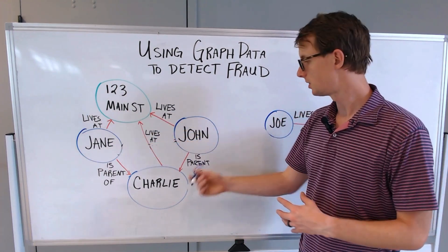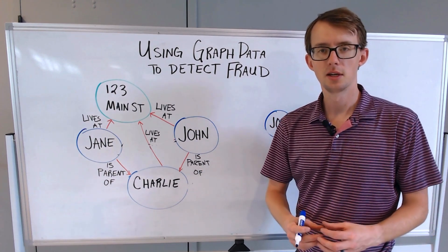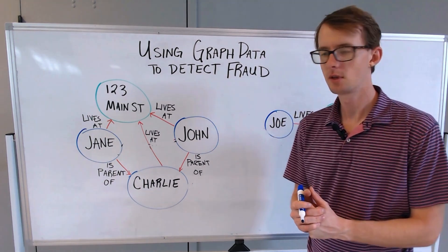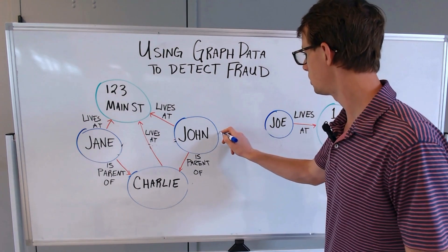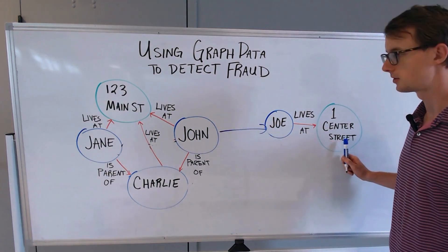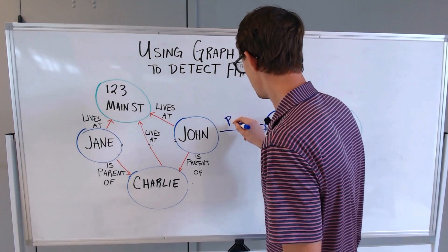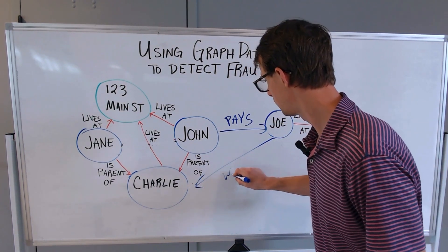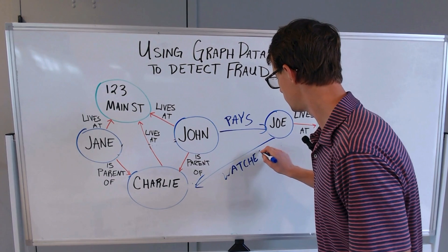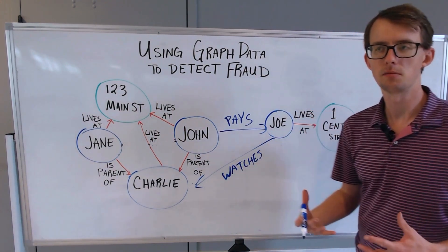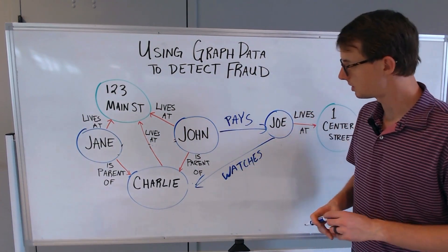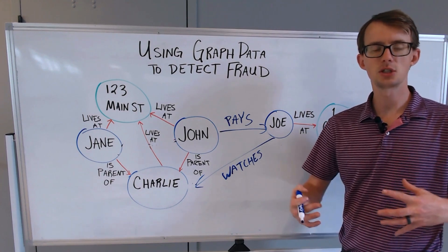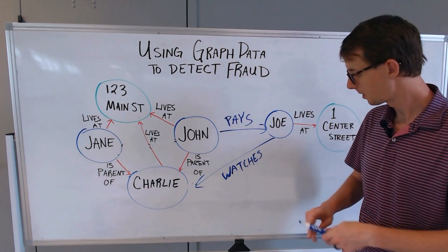So these are two parents of the same individual, and they want to use this childcare subsidy benefit because childcare is very expensive and they want to take advantage of that. There might be an individual named Joe that lives at 1 Center Street. John might pay Joe, and then Joe might be related to Charlie by Joe watches Charlie or babysits, or is present with Charlie during the day while parents are at work. This is what the relationship of all of these different entities should look like. This is what the graph structure should look like.